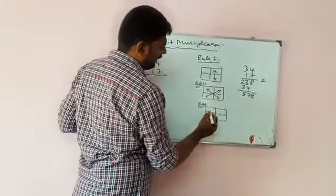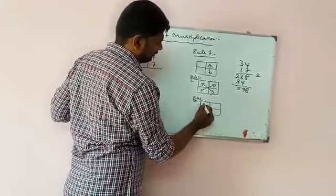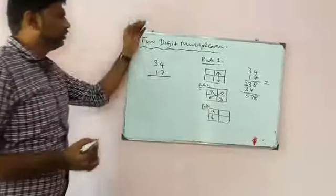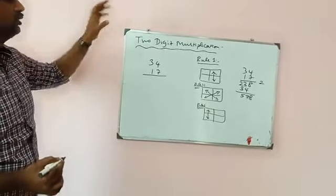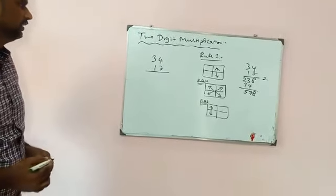Next, you are going to multiply the tens place. These are the three rules followed in two-digit multiplication.